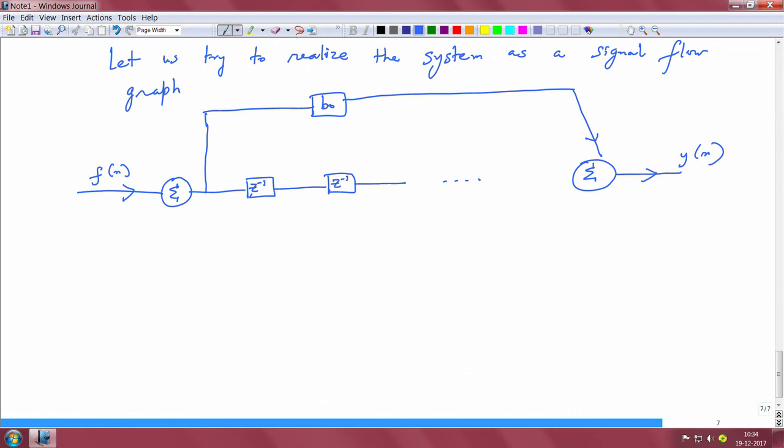Then f(n) going through this delay is f(n-1). f(n-1) is scaled by b_1 and then gets to the output, and so on. You can think of having all these gains b_0, b_1, b_2, and so on, taken off at various tab delays. They get summed. That is one component for y(n).